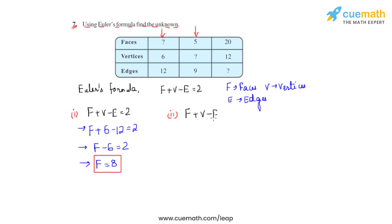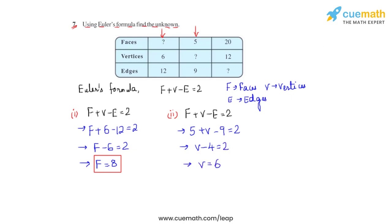We have f plus v minus e is equal to 2, where in this column the vertices are not given. So we substitute the faces which is 5, vertices is unknown, and e is 9, giving us 5 plus v minus 9 is equal to 2. Solving the left hand side we get v minus 4 is equal to 2, and at the end we get v is equal to 6.